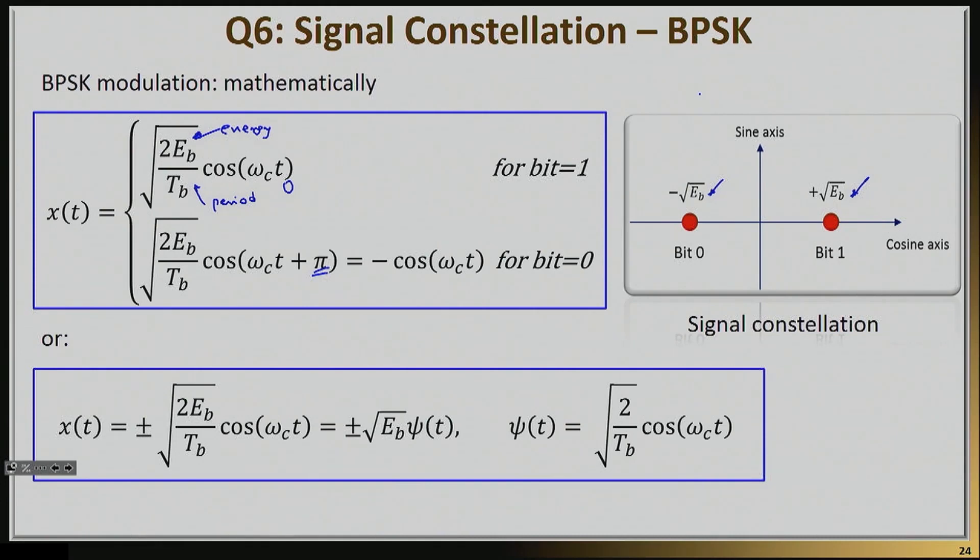Now, the reason that this becomes quite useful is essentially now, we are saying we have a basis function, which is my cosine, and we can expand all the signals of that modulation scheme along this basis function. In more complex cases, we need a sine as well to expand the signal, not just a cosine, but in the single BPSK modulation scheme, that is actually sufficient.